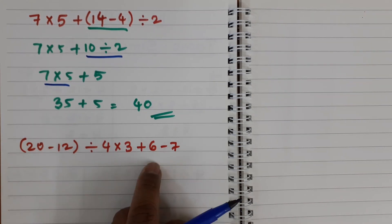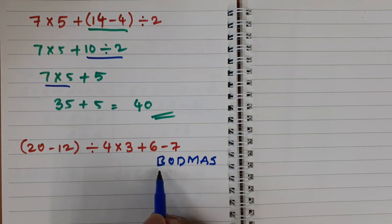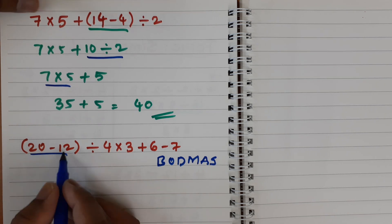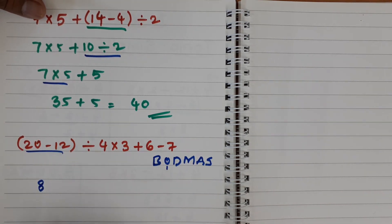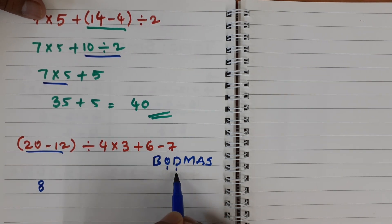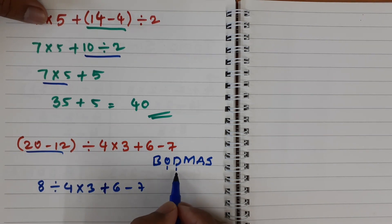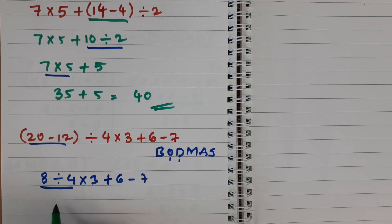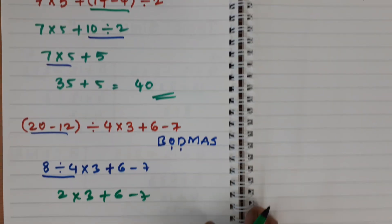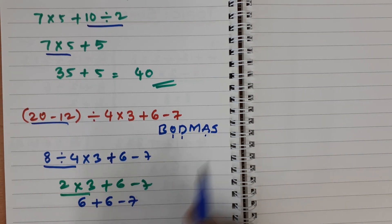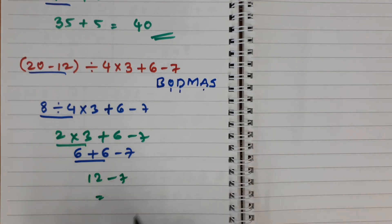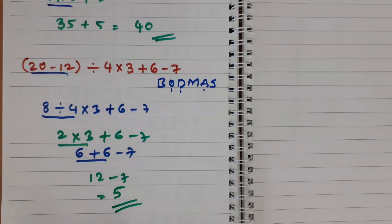Let us see another example. First solve the bracket: 20 minus 12 is 8. No order of. Division: 8 divided by 4 is 2. Then multiplication: 2 into 3 is 6. Write 6 plus 6 minus 7. Addition: 6 plus 6 is 12 minus 7. Finally subtraction: 12 minus 7 is 5. So 5 is the correct answer.